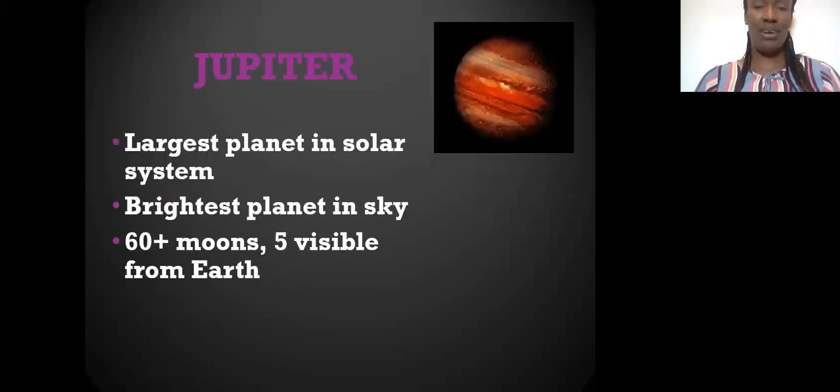Let's look at Jupiter, the big body planet we call it. It is the largest planet in the solar system, the brightest planet in the sky. It has 60 plus moons, five visible from Earth.